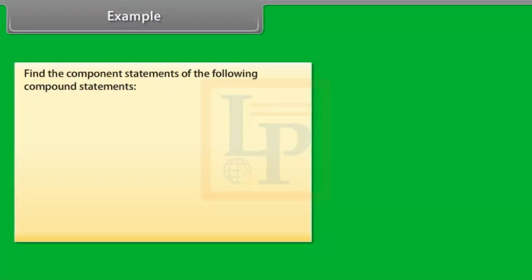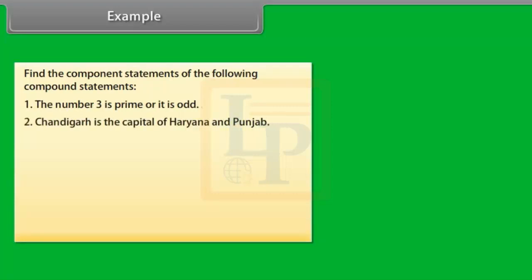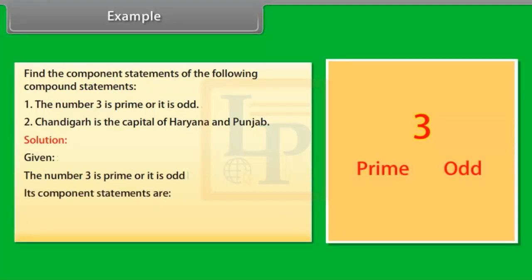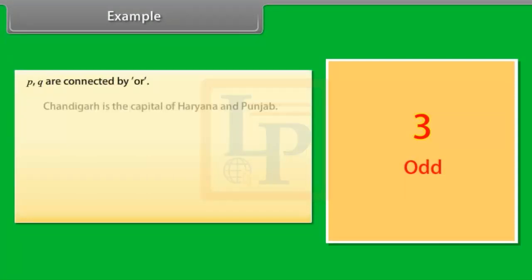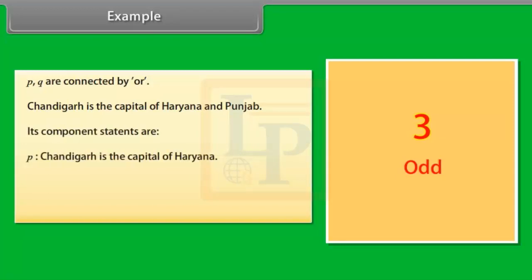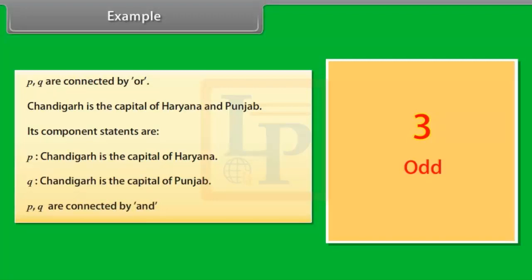Example: Find the component statements of the following compound statements. (1) The number 3 is prime or it is odd. (2) Chandigarh is the capital of Haryana and Punjab. Solution: For statement 1, P — the number 3 is prime; Q — the number 3 is odd. P and Q are connected by OR. For statement 2, P — Chandigarh is the capital of Haryana; Q — Chandigarh is the capital of Punjab. P and Q are connected by AND.